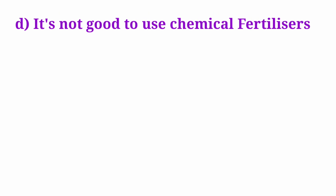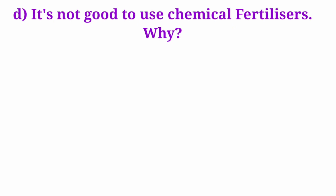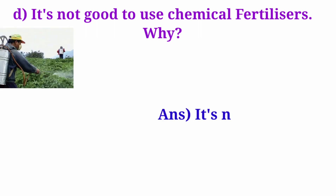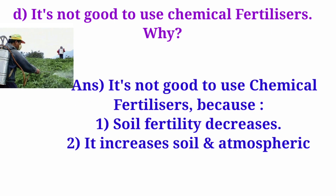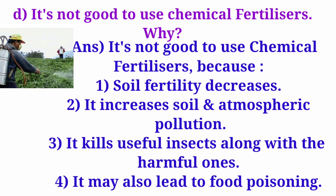Question D: It's not good to use chemical fertilizers. Why? Answer: It's not good to use chemical fertilizers because soil fertility decreases, it increases soil and atmospheric pollution, and it kills useful insects along with the harmful ones. It may also lead to food poisoning.